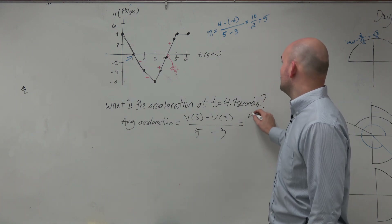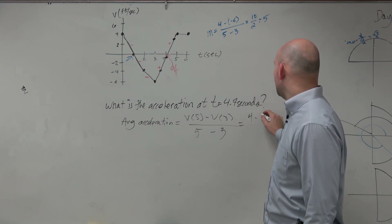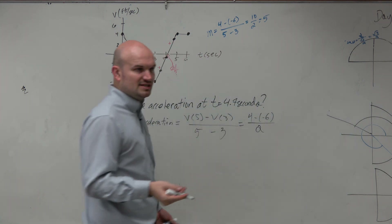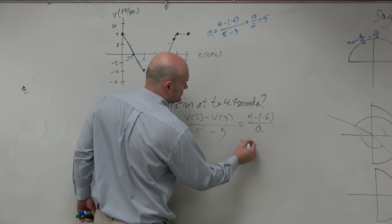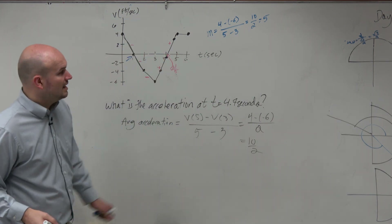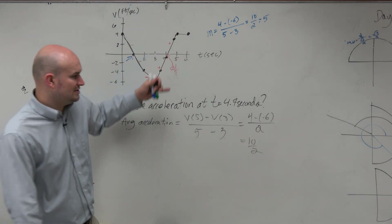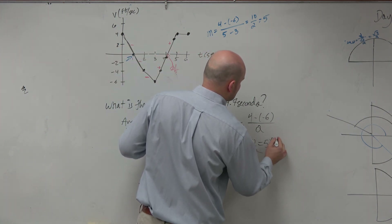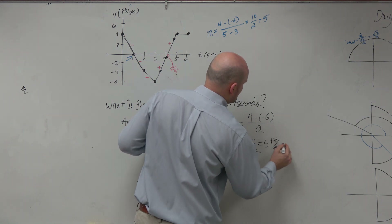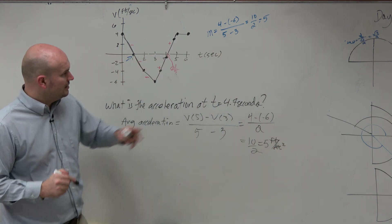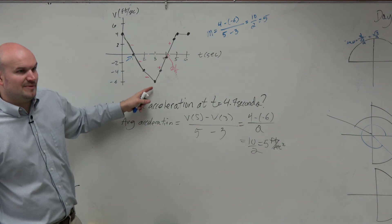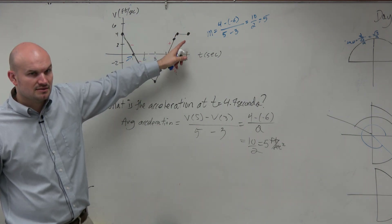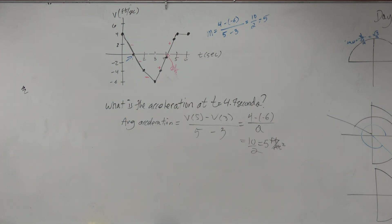So v sub 5 is 4 and v sub 3 is negative 6, divided by 2. That gives us 10 halves, which is equal to 5 feet per second squared. It doesn't matter where you are along here — it's going to be 5 feet per second squared anywhere. So we already had the math there. That wasn't as bad.